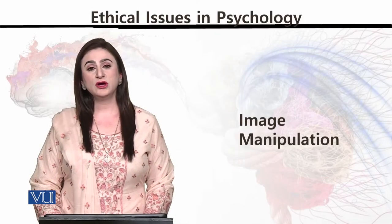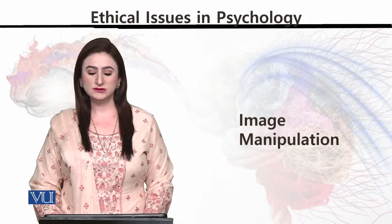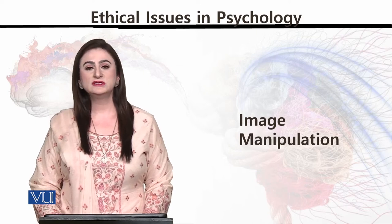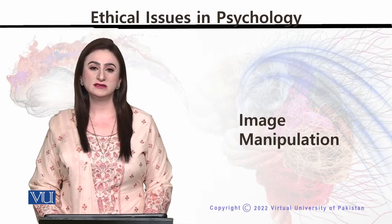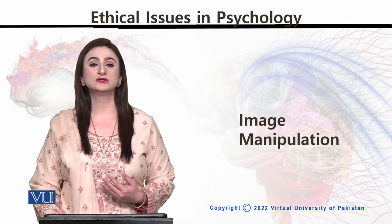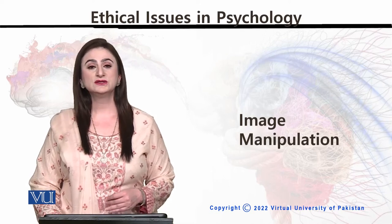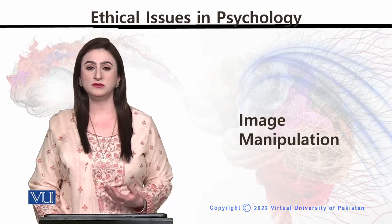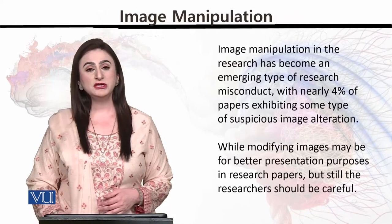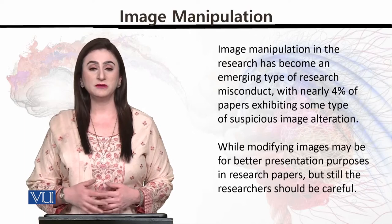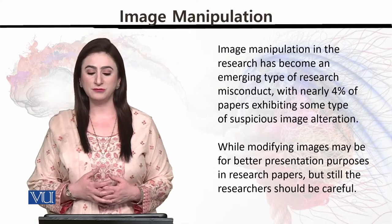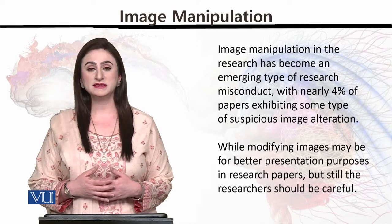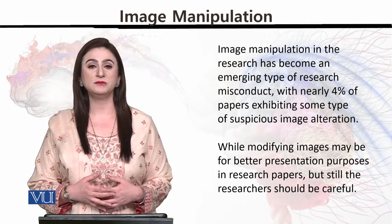The next thing we are going to discuss today is image manipulation. Many students may not have seen the different types of images and sources given in different research journals. We are concerned about how a researcher can manipulate those images. Image manipulation in research has become an emerging type of research misconduct, with nearly 4% of papers exhibiting some type of suspicious image alteration.